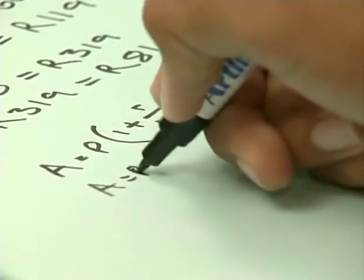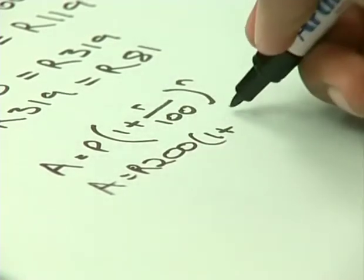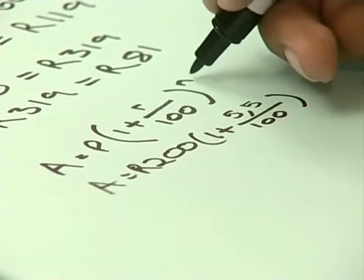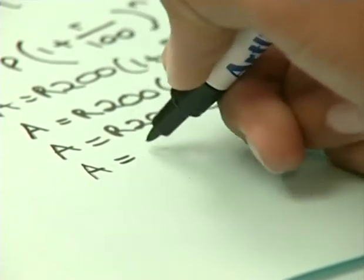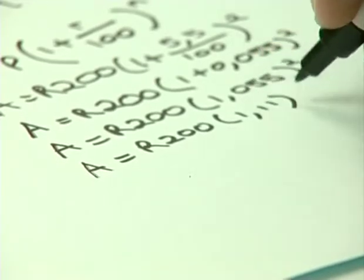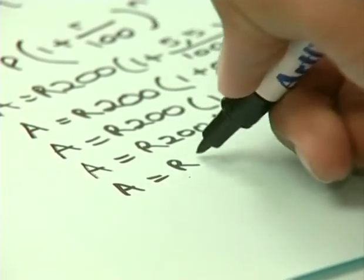Can I see what all of this will work out to? Go ahead. Substituting into the compound interest formula, we replace P with 200 for the principal, r is 5.5, and the number of periods n becomes two. We simplify inside the bracket, giving us 1.055, and raising this to the power of two gives approximately 1.1.